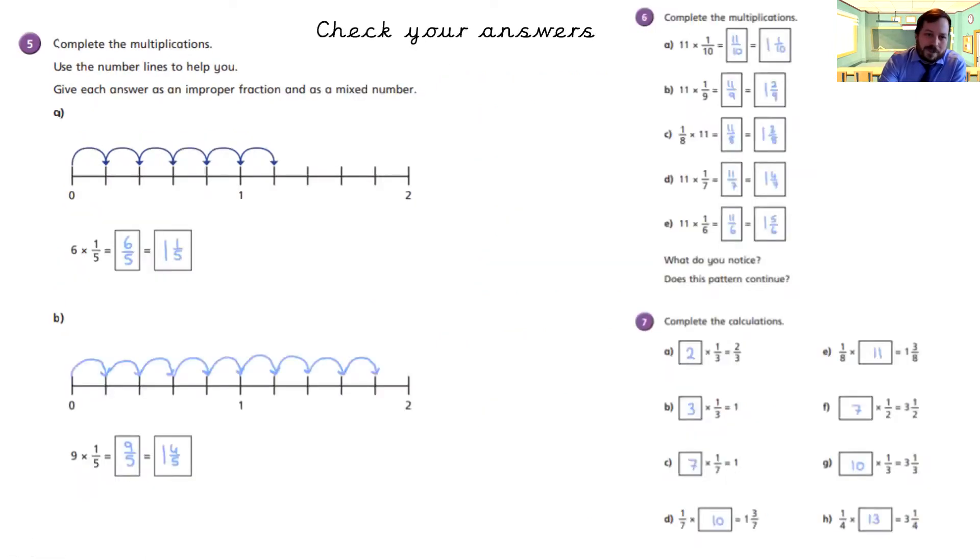Okay, let's have a look. So first off, it shows us one times six is six-fifths. Six-fifths is the same as one and one-fifth. Nine times one-fifth is nine-fifths, which is the same as one and four-fifths. Over on this side, eleven times one is eleven, so it's eleven-tenths, which is the same as one and one-tenth. Eleven times one is eleven-ninths, because we keep the denominator the same. That's the same as one and two-ninths.